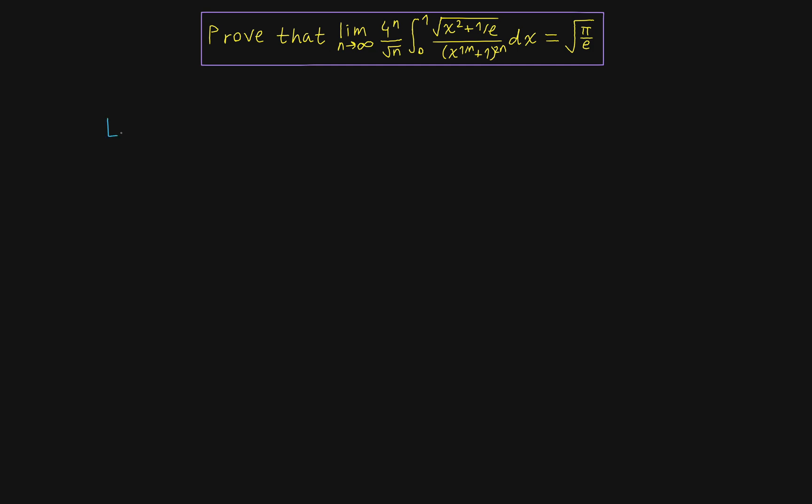So first, let's let I(n) be the integral part of this problem, which is the integral from 0 to 1 of square root of x squared plus 1 over e, all divided by x to the 1 over n plus 1 to the 2n dx.